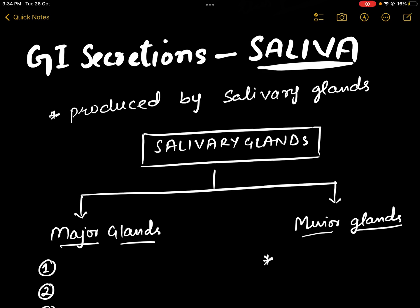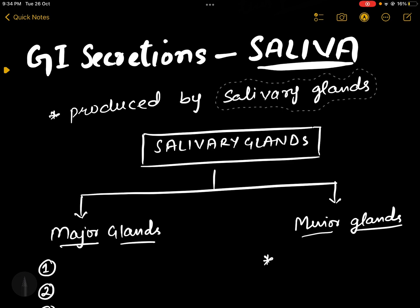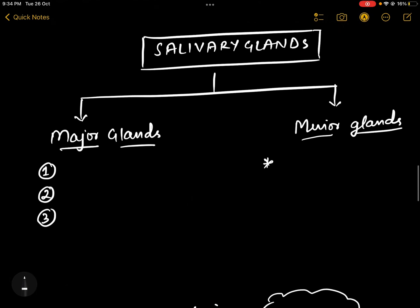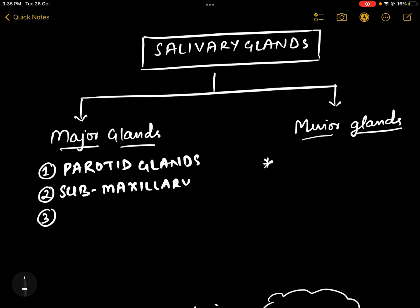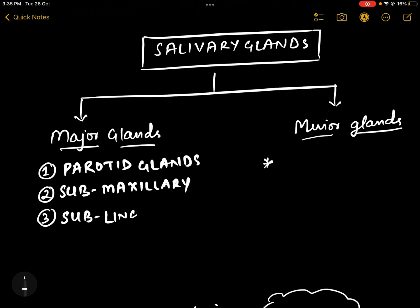In this section we'll discuss the secretions of the gastrointestinal tract, starting with saliva. Saliva is produced by the salivary glands, which can be broadly classified into two categories: major glands and minor glands. Major glands include the parotid glands, submaxillary (submandibular), and sublingual glands. Minor glands include glands like von Ebner's glands.